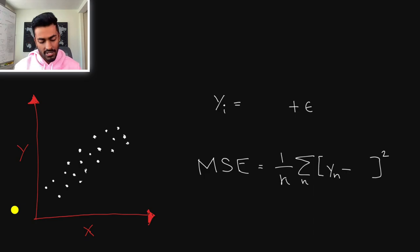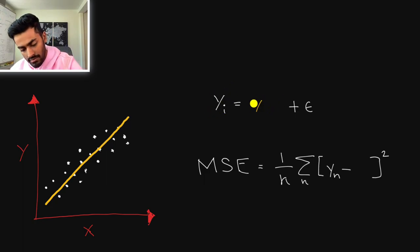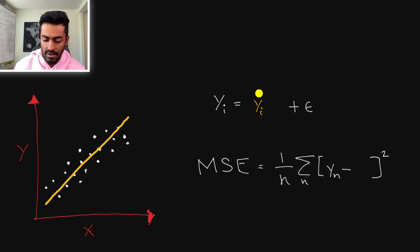So typically in regression, when we have a cloud of data points, we want to try to draw some curve through them, something that probably looks like this. In these data points, we can say that the response variable yi is going to equal some prediction, which we represent with a little hat over the response variable, plus some irreducible error.